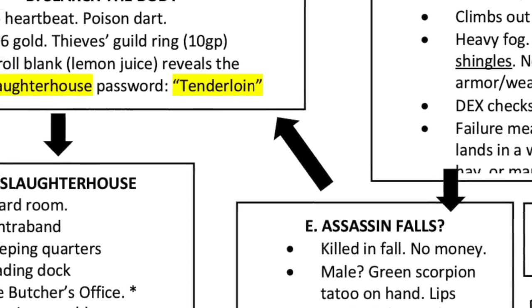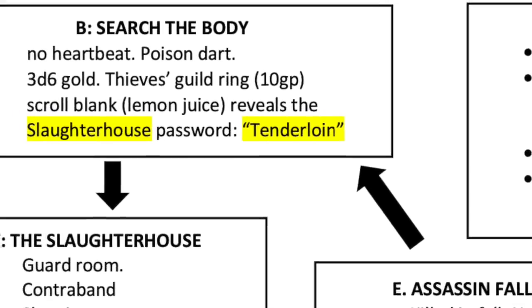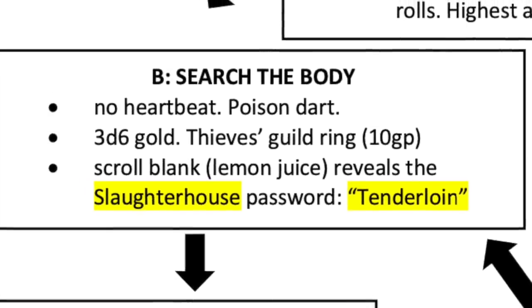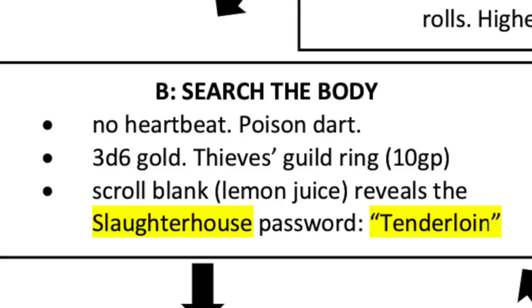Either outcome leads back to B — searching the body. Scabs has no heartbeat, killed by poison. He carries 3d6 gold and a 10-gold-piece ring identifying him as a low-level member of the Thieves' Guild. For the handout, get a piece of parchment paper, roll it up, and use it as the scroll. On it, write the Swine Gang's secret code word of the day: 'tenderloin.' The password grants entry into the Swine Gang's hideout called the Slaughterhouse, and any rogue will know it's located in the cellars of a large tenement in a bad section of town. For extra credit, write the password in lemon juice — it appears invisible and the players must heat it over a flame to reveal the magic word.